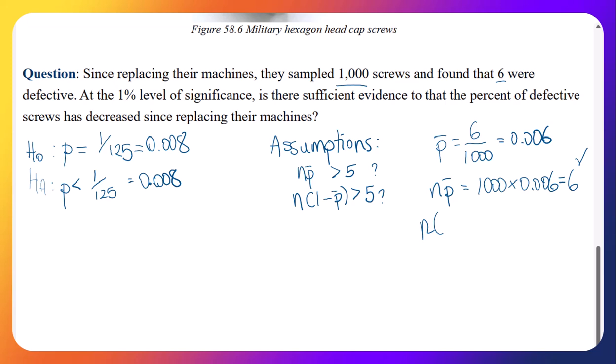And n times 1 minus P bar, that's also going to be okay. That's going to be 1,000 times 1 minus 0.006, which will give us the remaining 994, which is also greater than 5. So we're good in this case. Our assumptions that n times P and n times 1 minus P are indeed satisfied.